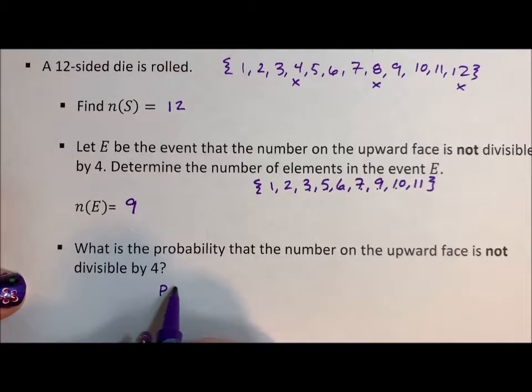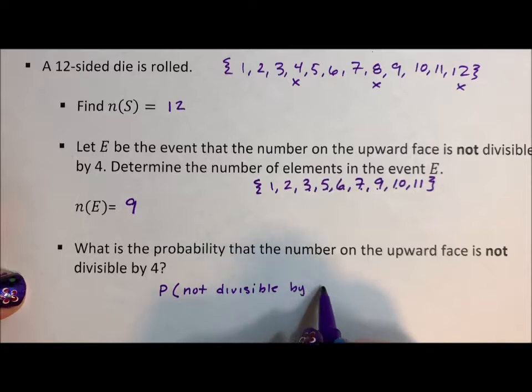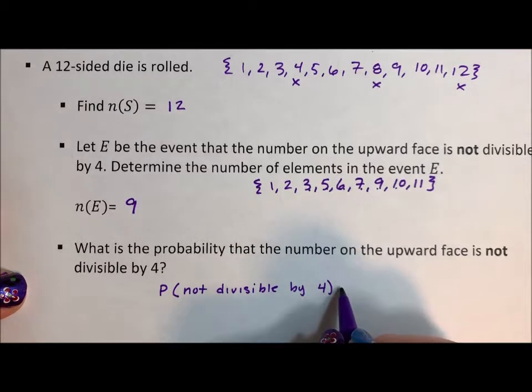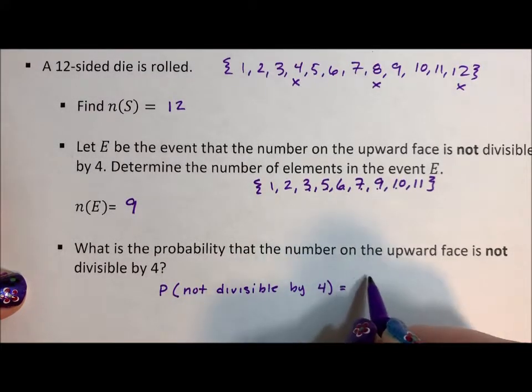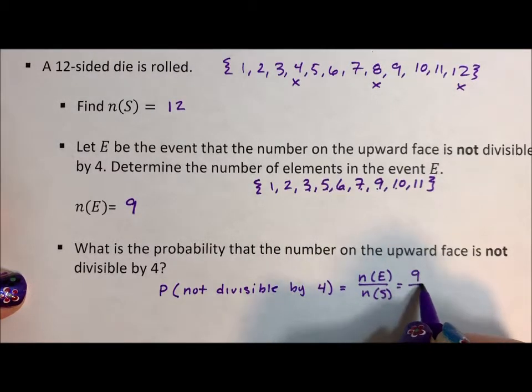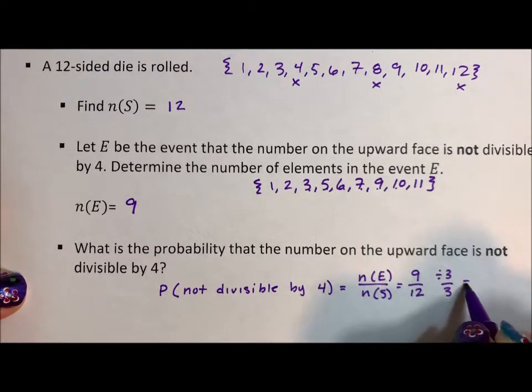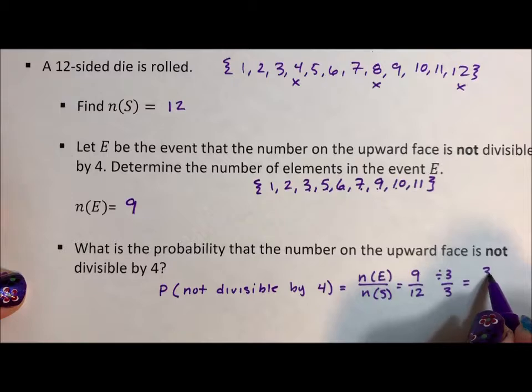So the probability that it is not divisible by 4 is the number in the event divided by the number in the sample space, which is 9 divided by 12, which if we reduce this by dividing 3 out of numerator and denominator, is 3 fourths.